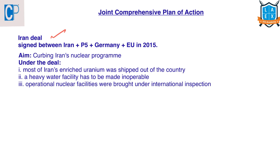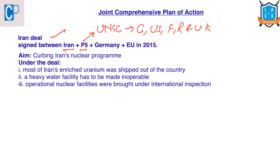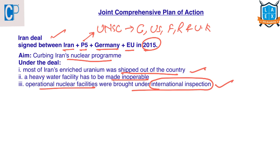The Joint Comprehensive Plan of Action (JCPOA), commonly known as the Iran Deal, was signed in 2015 between Iran, the P5 countries (the five permanent members of the UN Security Council — China, US, France, Russia, and UK), plus Germany and the European Union. The aim was to curb Iran's nuclear program. Under the deal, most of Iran's enriched uranium had to be shipped out, a heavy water facility made inoperable, and nuclear facilities brought under international inspection. In return, sanctions on Iran would be lifted.